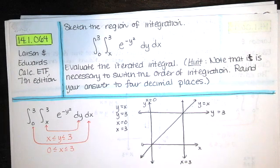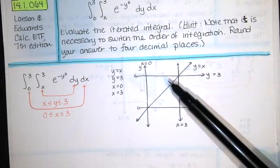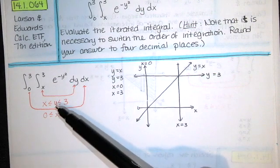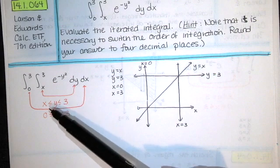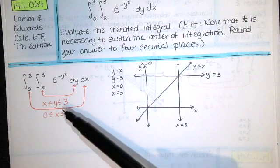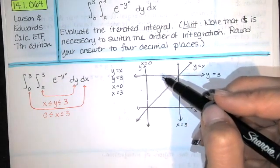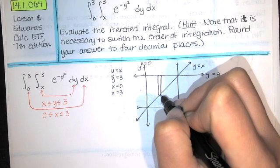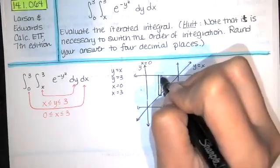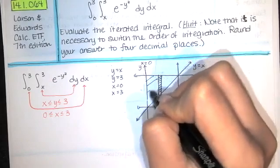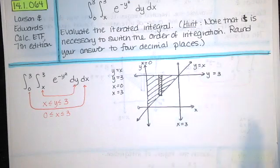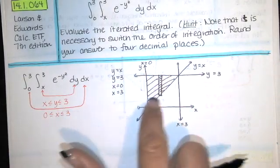After sketching those four curves, some students may have trouble deciding which region is the region of integration. But these bounds will help you — this tells you that y starts at x and ends at 3, so x is our bottom function and 3 is our top function. Since y is going from a function to a function, we draw representative rectangles vertically, and we want the bottom to be x and the top to be 3. That means the region up here is our region of integration.